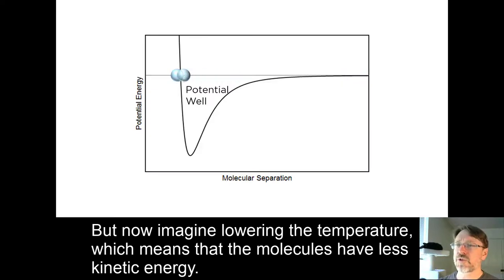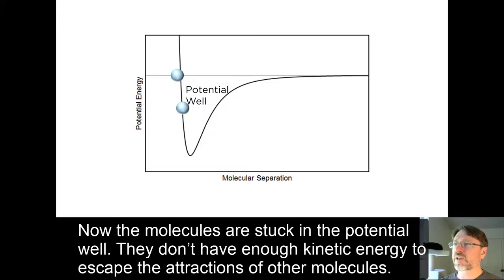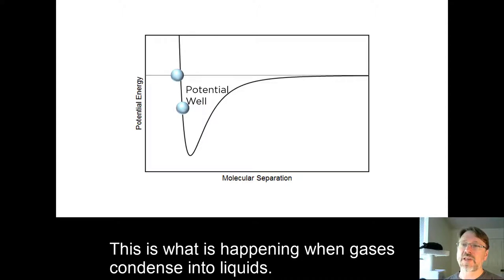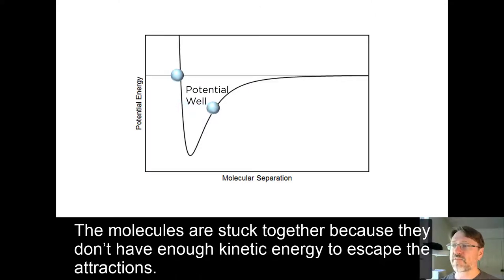But now imagine lowering the temperature, which means that the molecules have less kinetic energy. Now the molecules are stuck in the potential well. They don't have enough kinetic energy to escape the attractions of other molecules. This is what is happening when gases condense into liquids. The molecules are stuck together because they don't have enough kinetic energy to escape the attractions.